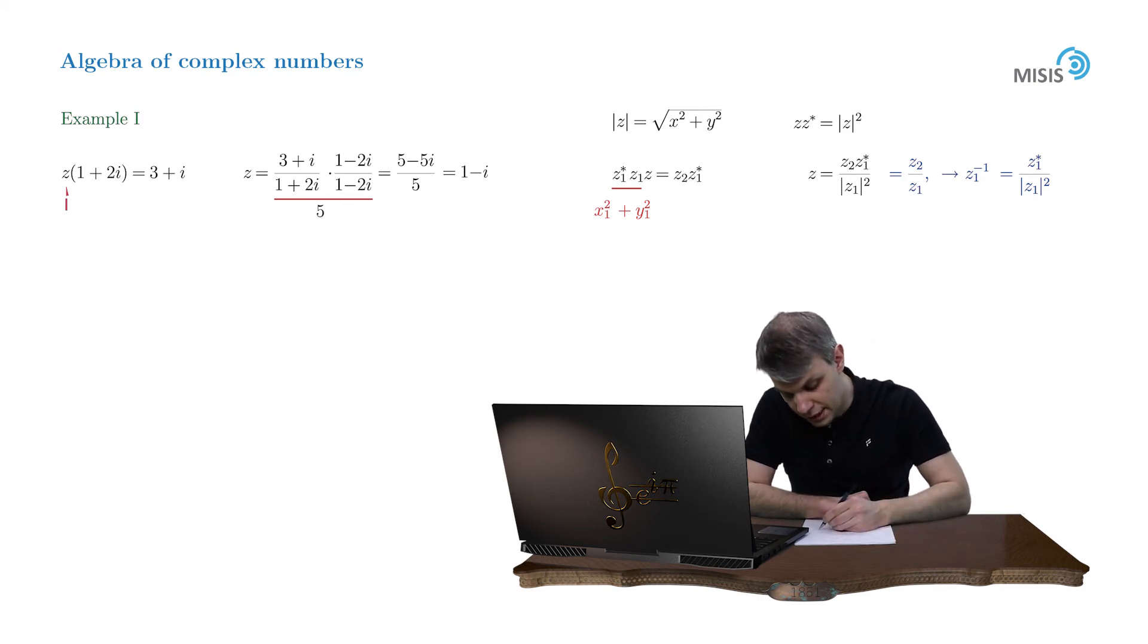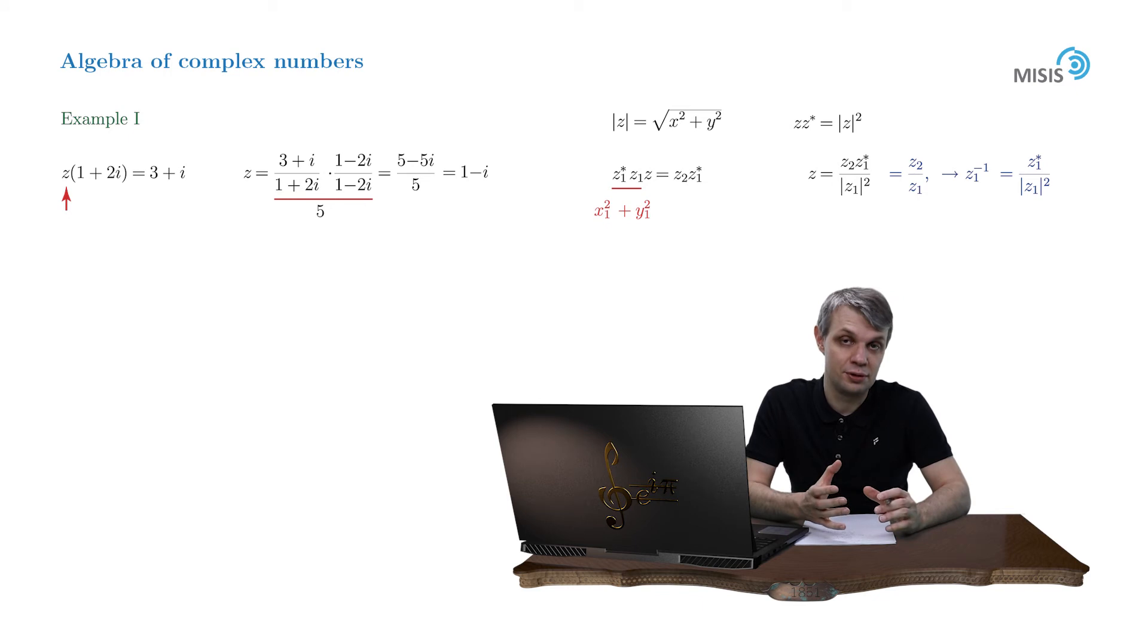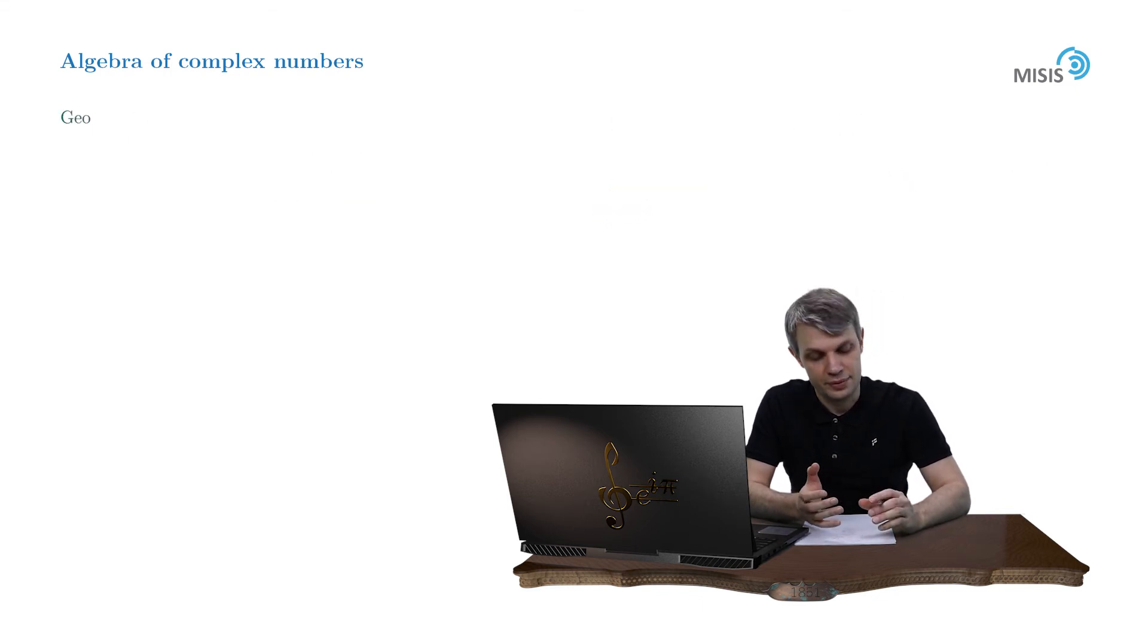And indeed, once you plug in this solution into your original expression, you obtain the valid identity. So what was discussed so far was called, in fact, an algebraic representation of a complex number. And then there is another representation which is also very powerful and very suitable. It's a geometric interpretation.